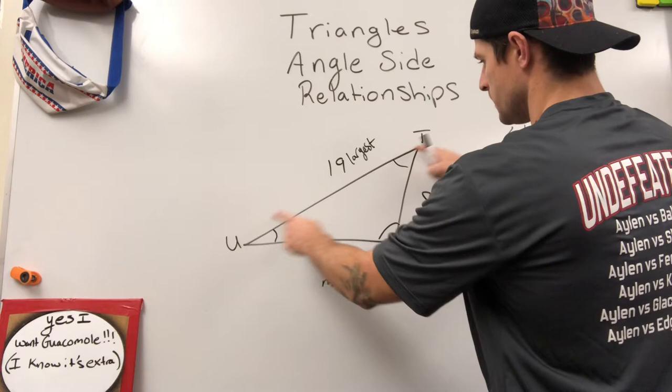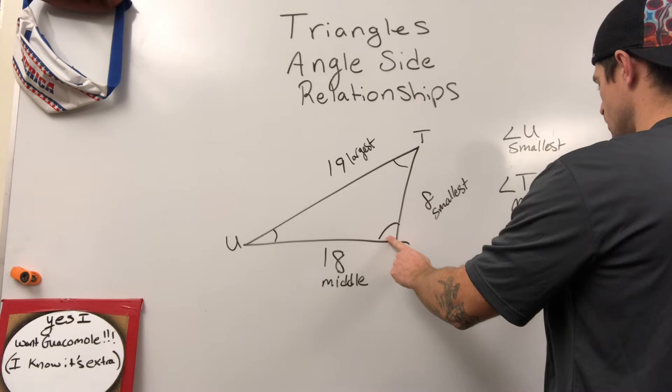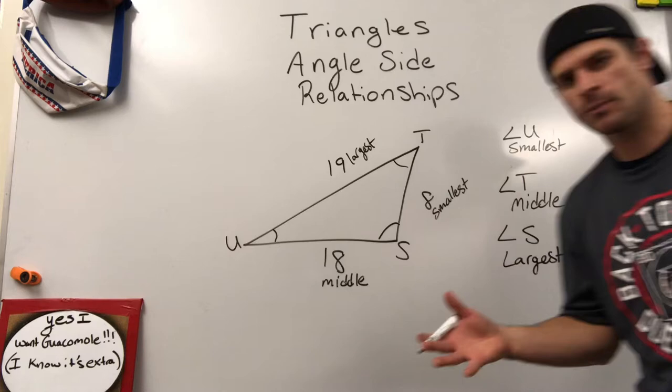Okay, 19 is our largest side length, so we go across the triangle from TU side length TU to angle S. Angle S is going to be our largest angle. It's going to have the largest value right here.